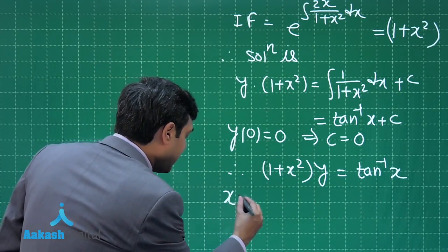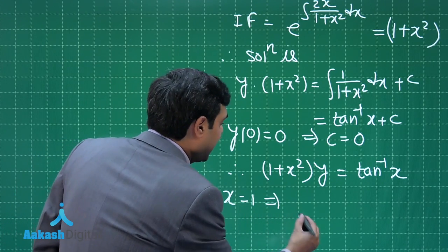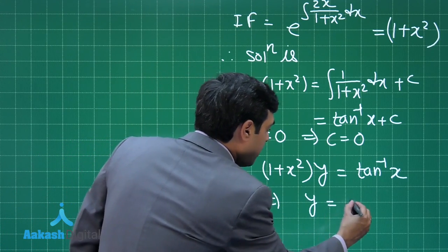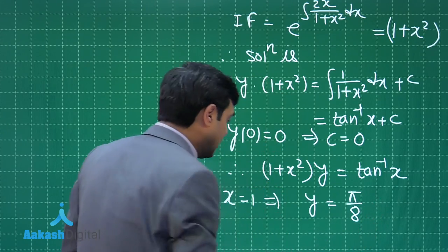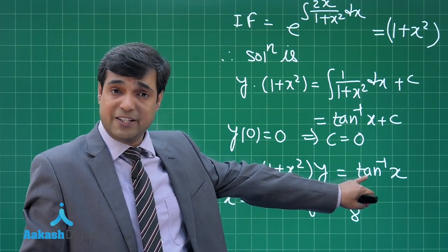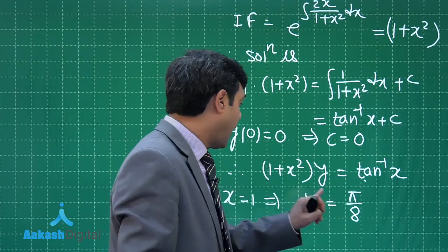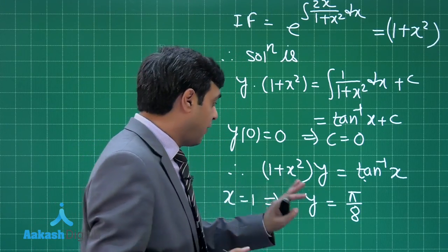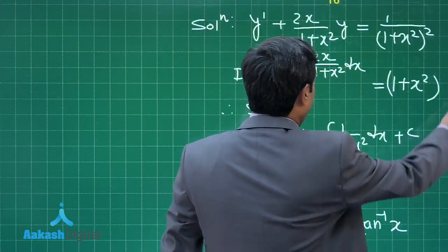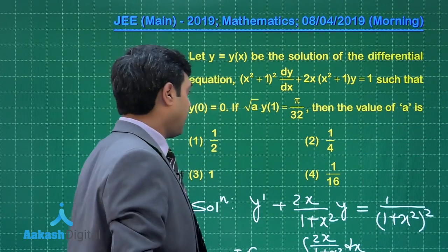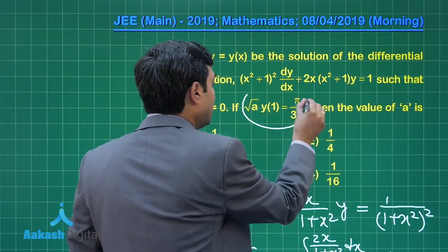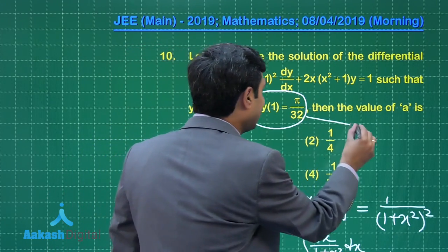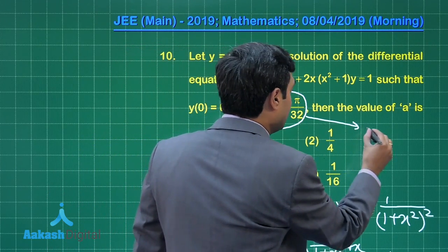Substituting x = 1: y(1) = tan⁻¹(1) / (1 + 1) = (π/4) / 2 = π/8.